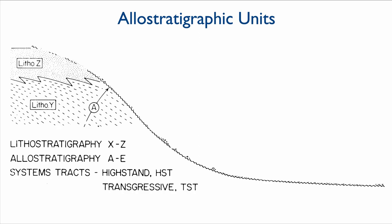So how does it work now using allostratigraphy, subdividing the same succession using unconformity? The first unit is defined essentially by the first unconformity that we find, which I mark here in red. So this is my first allostratigraphic unit, which is unit A.